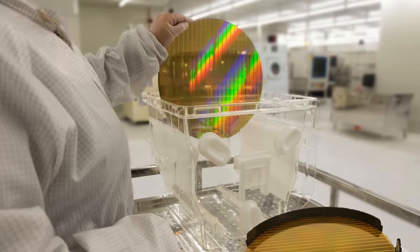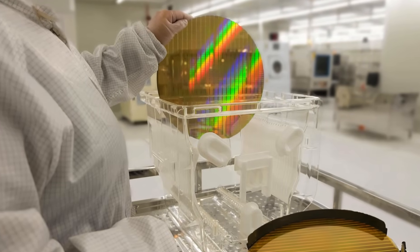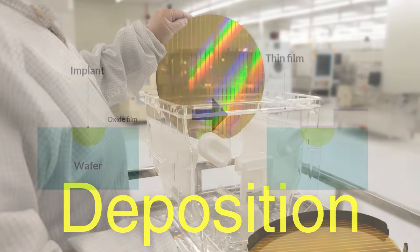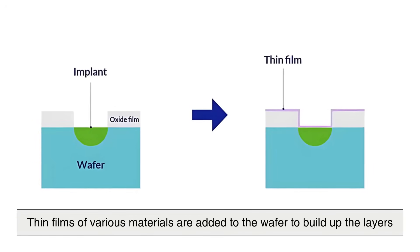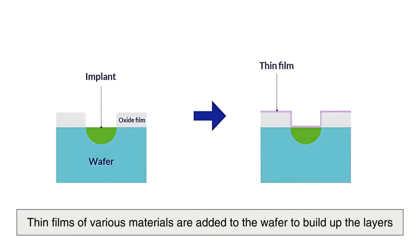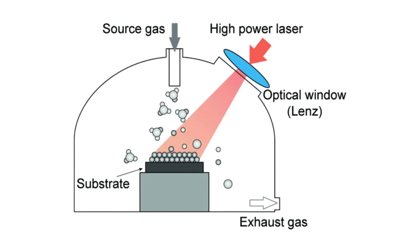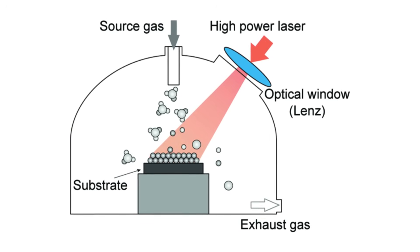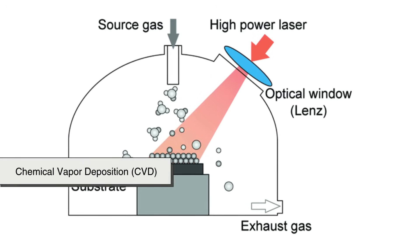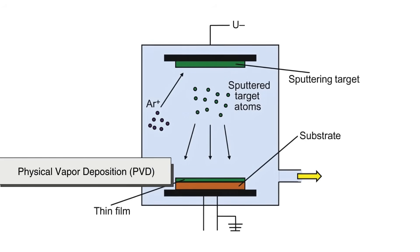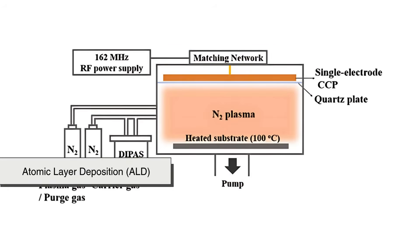Another critical step in semiconductor fabrication is deposition, where thin films of various materials are added to the wafer to build up the layers necessary for the chip's functionality. There are several deposition techniques, including chemical vapor deposition, physical vapor deposition, and atomic layer deposition.